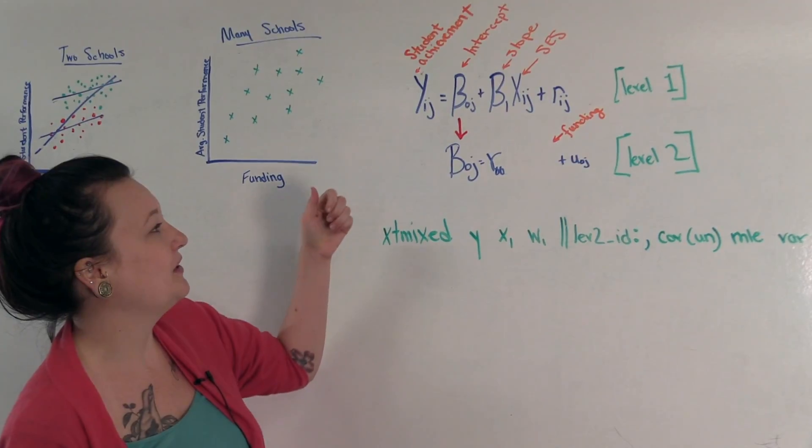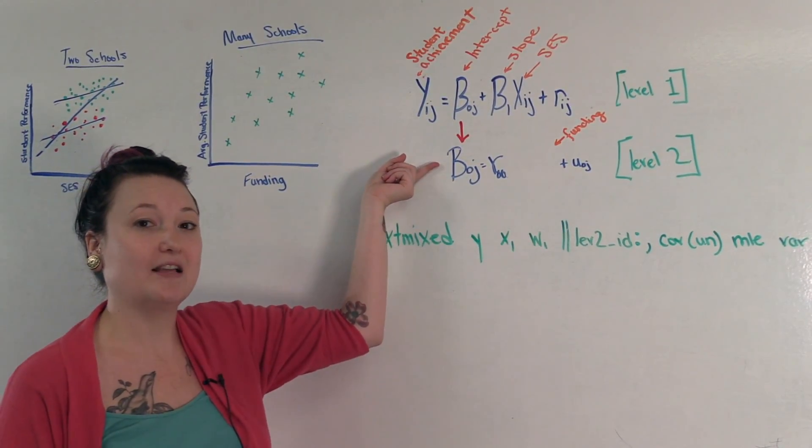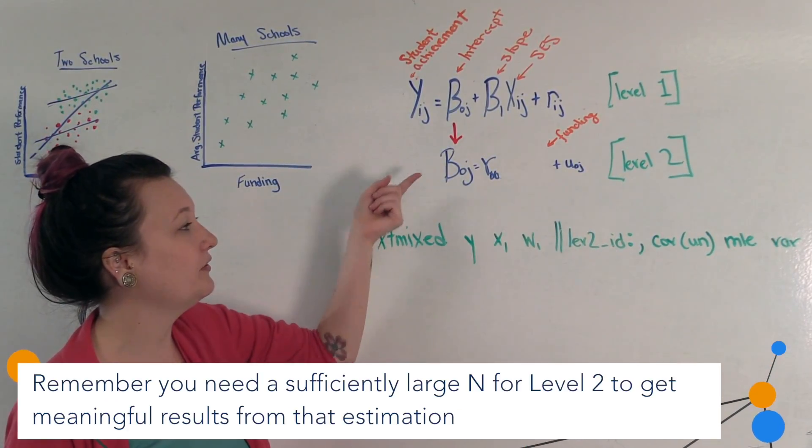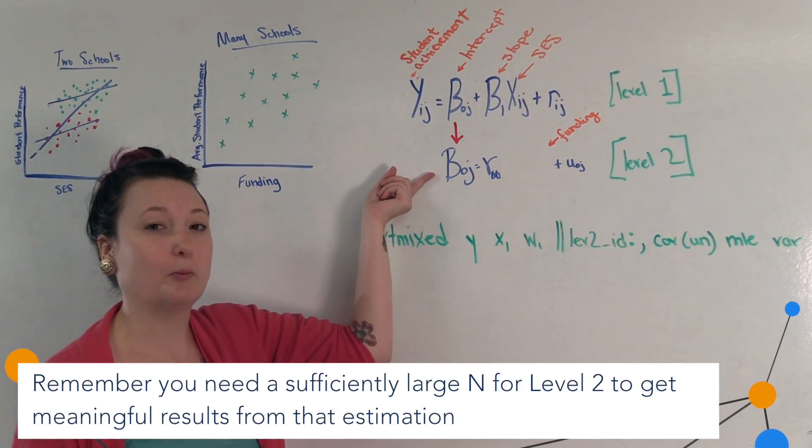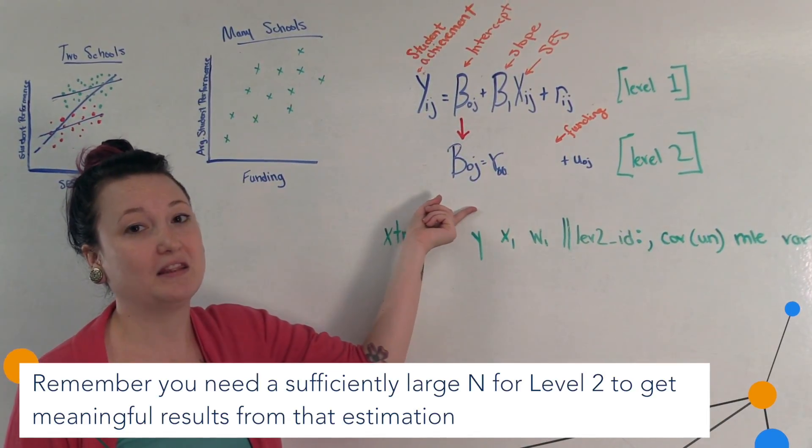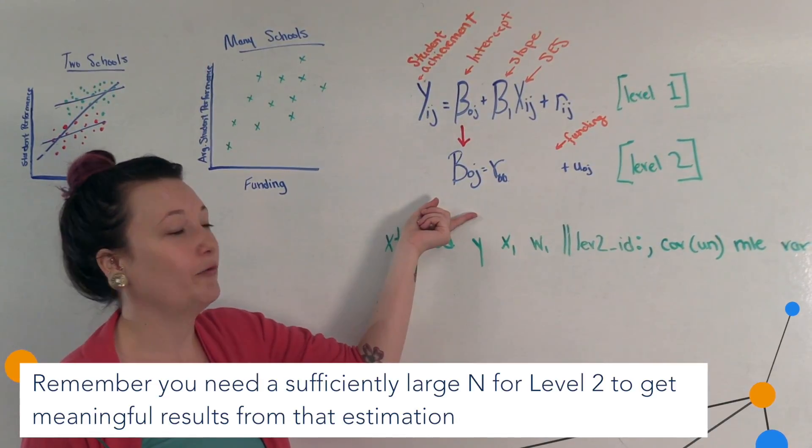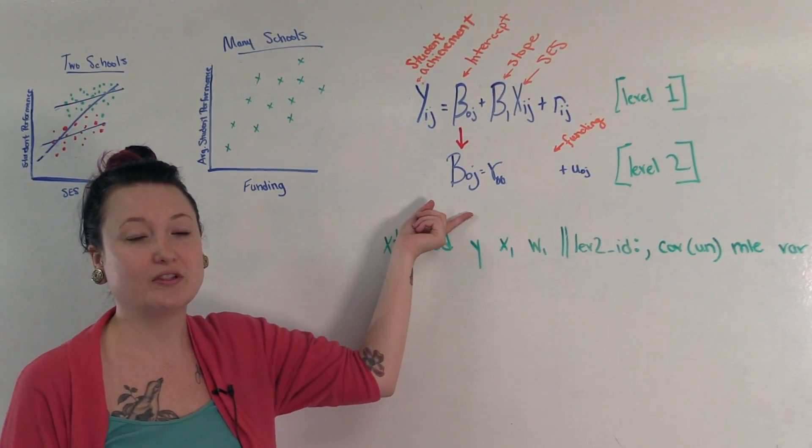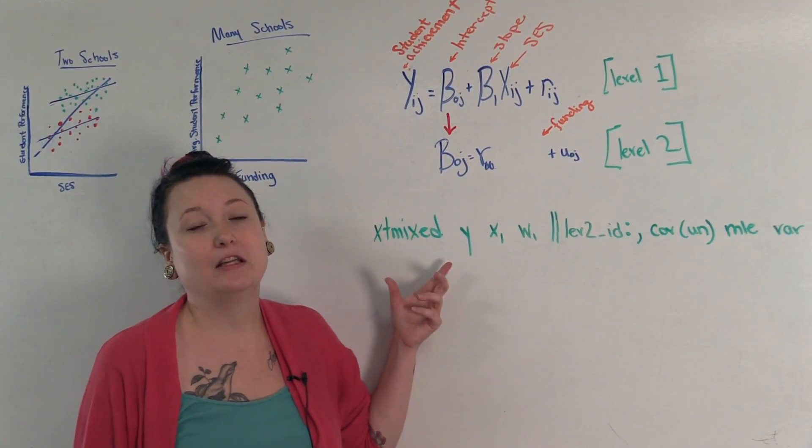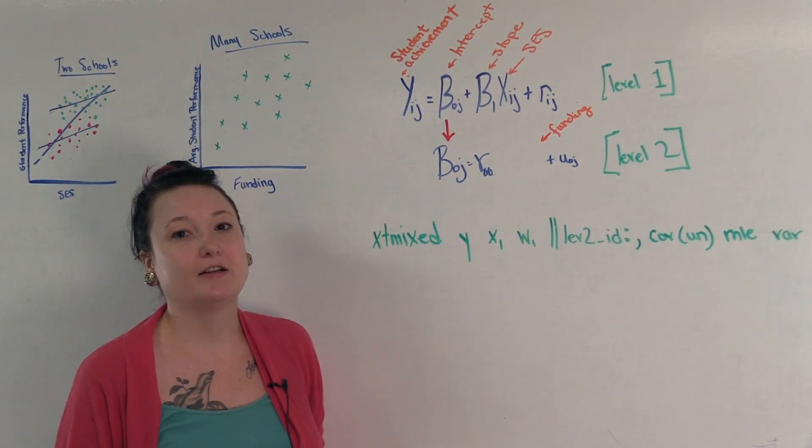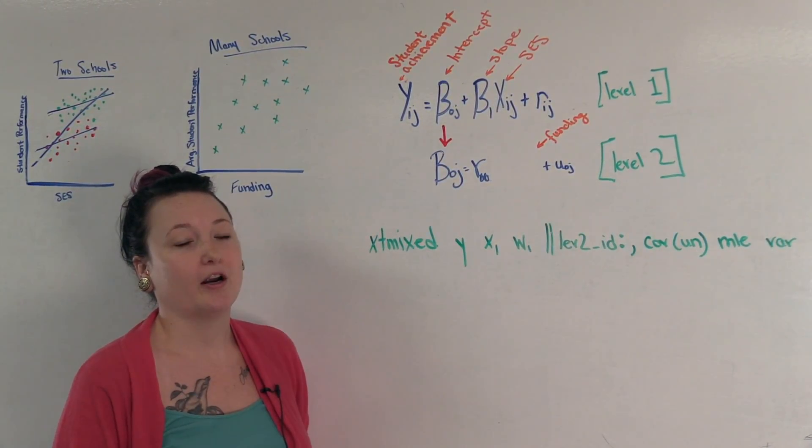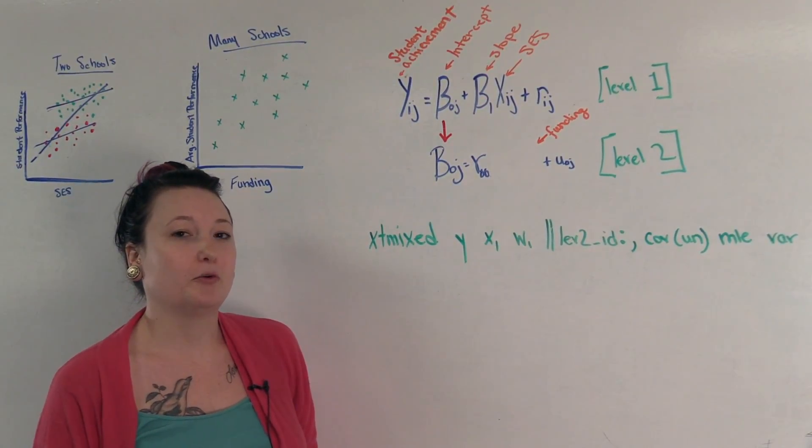And then another note is that because we are measuring a separate equation or we're calculating a separate equation at level two, we need to be sure that the n or the number of observations at level two is sufficiently high to adequately estimate this equation as well. So if we only had two or three schools such as in the scatter plot, it wouldn't be enough to adequately estimate this equation. But with a sufficiently large n, these models present considerable advancements over OLS, especially when using multi-level data where there's considerable between-group variation.